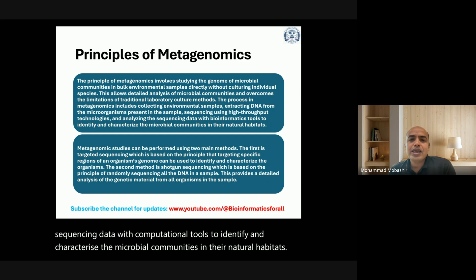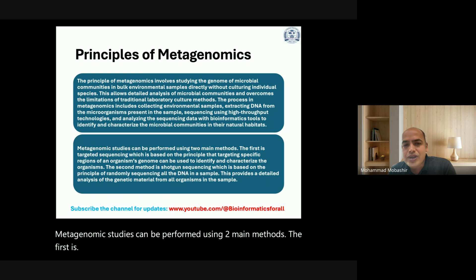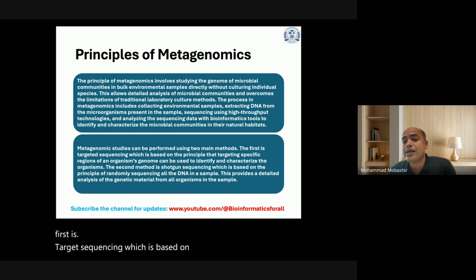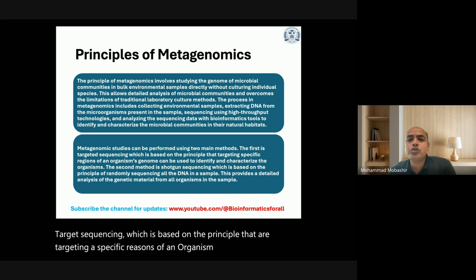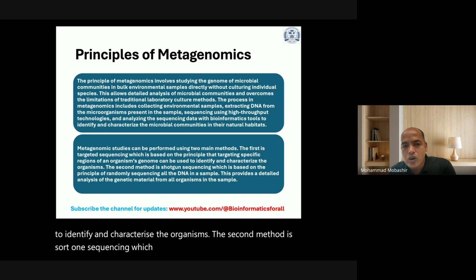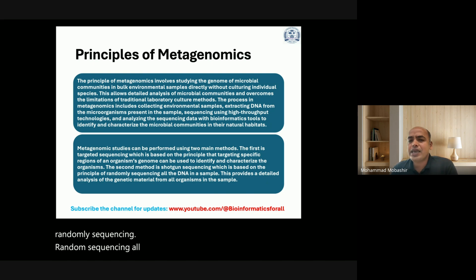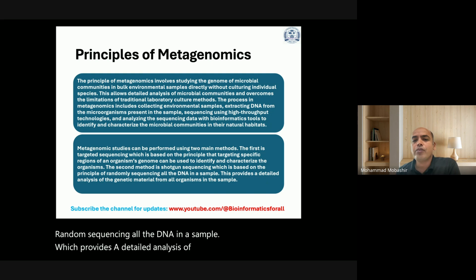Metagenomic studies can be performed using two main methods. The first is targeted sequencing, which is based on the principle that sequencing a specific region of an organism's genome can be used to identify and characterize the organisms. The second method is shotgun sequencing, which is based on randomly sequencing all the DNA in a sample, providing a detailed analysis of genetic material from all organisms present in the selected sample.